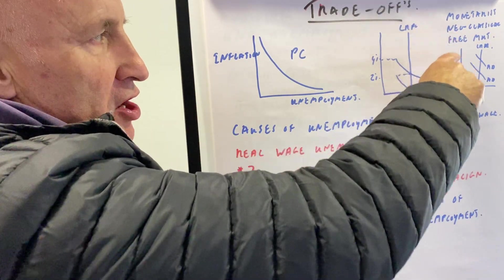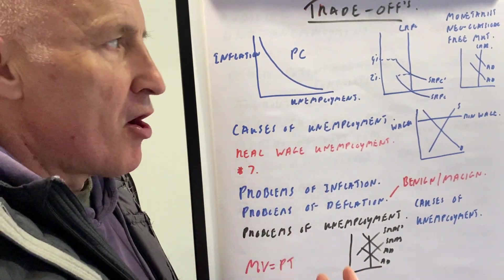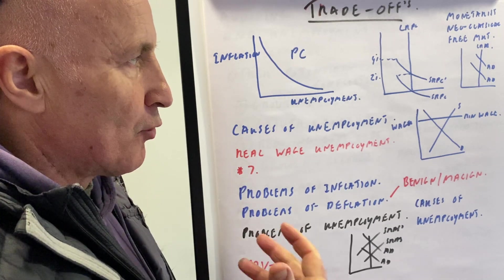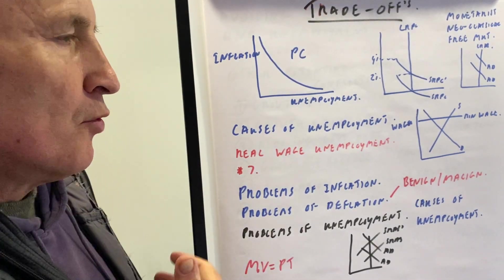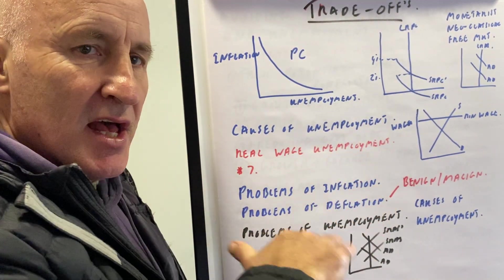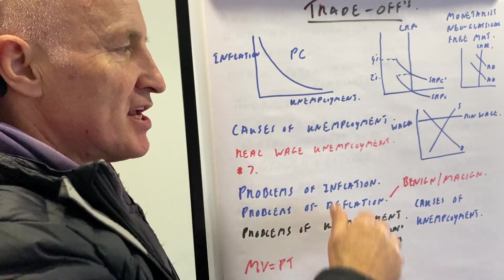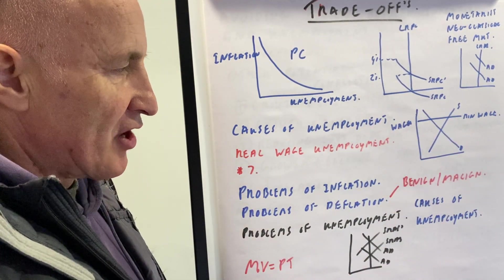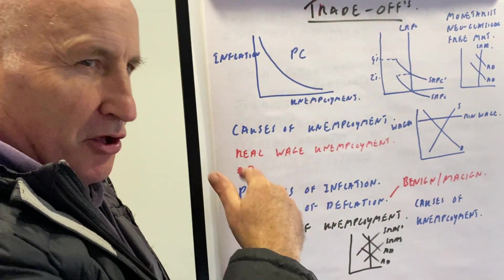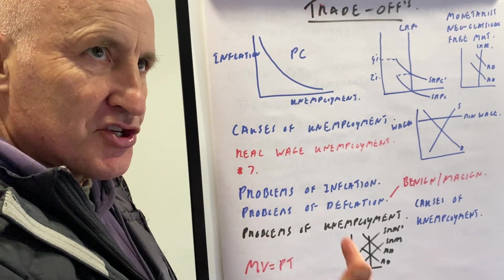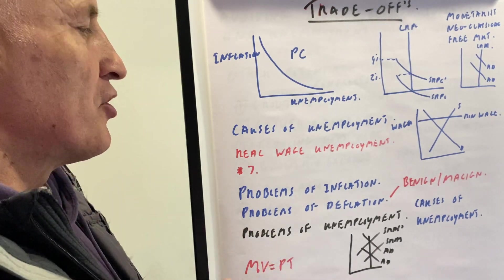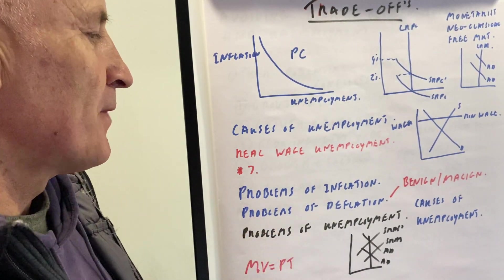We also looked at the monetarist argument — neoclassical free market believers — which shows that if you increase AD it will always lead to a rise in inflation. We also covered the causes of unemployment: remember there's real wage unemployment, which occurs when the minimum wage is above the equilibrium price so wages are not allowed to fall. There are also many other types: structural, frictional, cyclical, seasonal, and issues of occupational and geographical immobility.